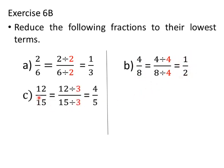Third: 12 by 15. The HCF of 12 and 15 is 3. So we divide both the numerator and the denominator by 3. Therefore, 12 divided by 3 upon 15 divided by 3 equals 4 upon 5. The lowest term of 12 by 15 is 4 by 5.